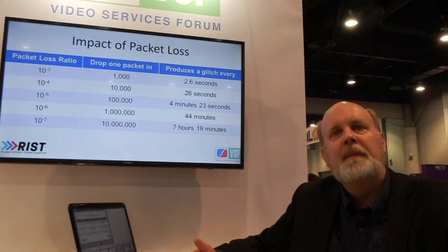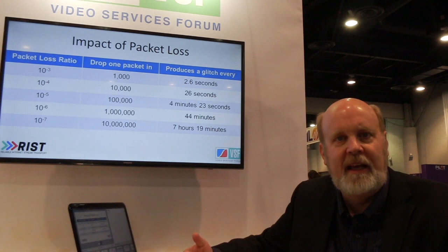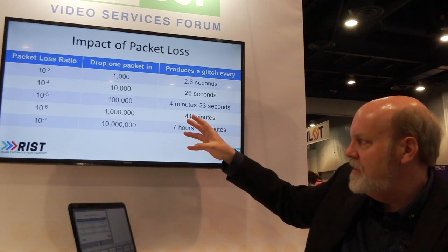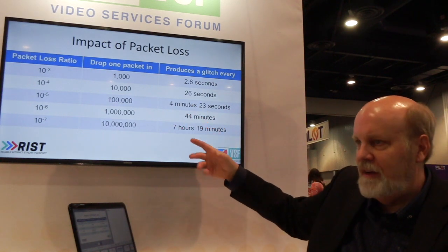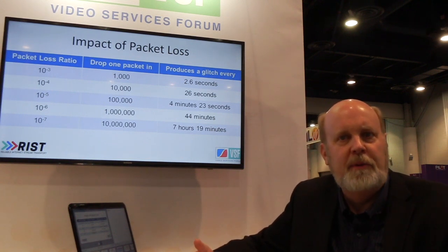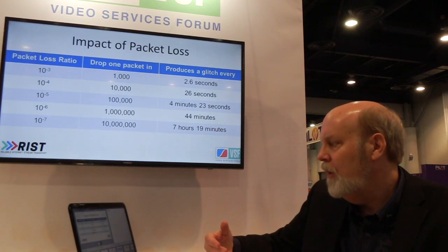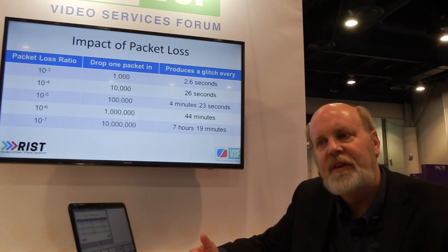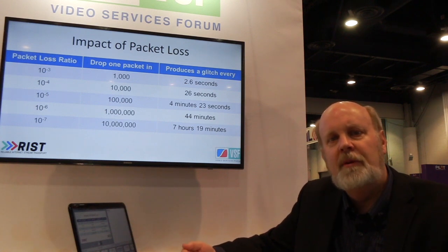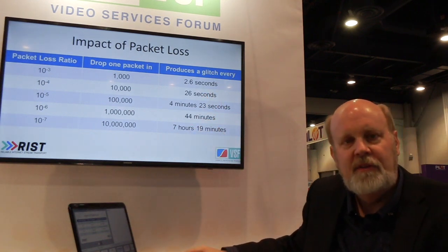10 to the minus fourth might be more typical behavior for the public internet — that means we're going to have a glitch every 26 seconds running at four megabits per second. So we want to get our packet loss ratios down to 10 to the minus six or 10 to the minus seven, so we have the opportunity to do a complete video feed of a program for a few minutes without having any packet glitches whatsoever. We're going to use RISC technology to improve the reliability of video delivery over the public internet, which may not have really good performance at the particular time you're trying to use it.